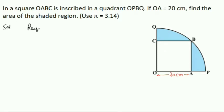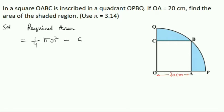The required area has two components: the quadrant and the square. To find the shaded region, the required area equals the area of the quadrant minus the area of the square. We subtract both areas to find the shaded region. We join O to B to identify the radius.